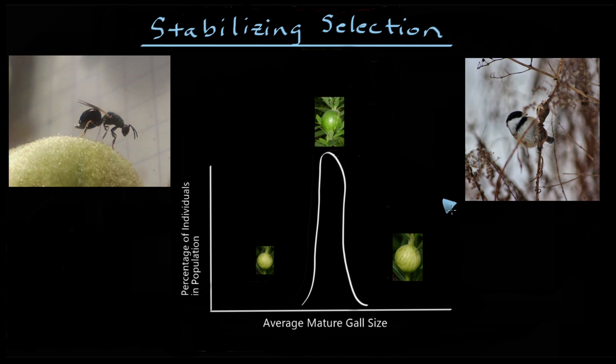But what happens when keen-eyed birds are introduced? Well, large galls become an easy meal for them because they're conspicuous in the environment. This creates a situation where small galls are selected against, as are large ones, ensuring that the medium-sized galls are favored. To remember what this distribution looks like, I tell myself that the trait distribution is being stabilized by pressure on both sides.